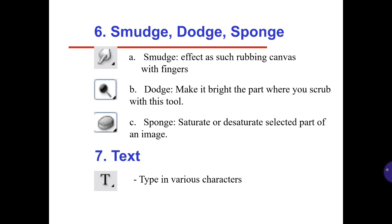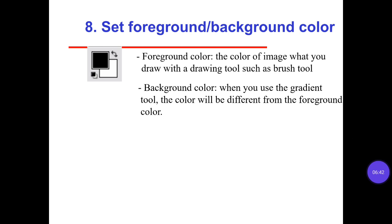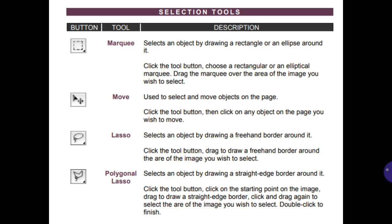Number 7: Text — type in various characters. Number 8: Set Foreground and Background Color. The foreground color is the color of the image you draw with the drawing tool, such as the Brush tool. Number 9: Background color — when you use the Gradient tool, this color will differ from the foreground color. Number 10: Selection tools — button, tool, and description.